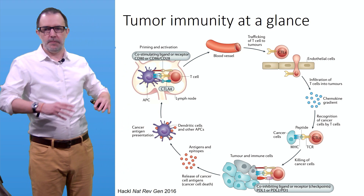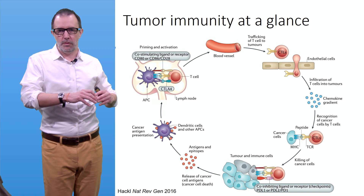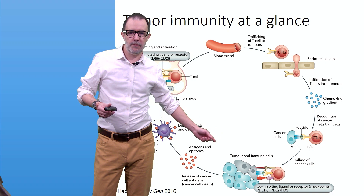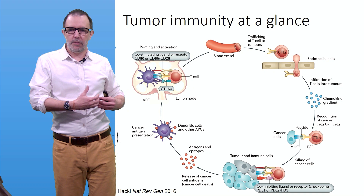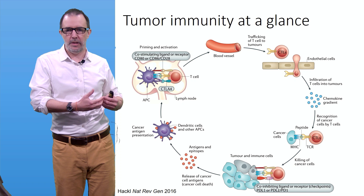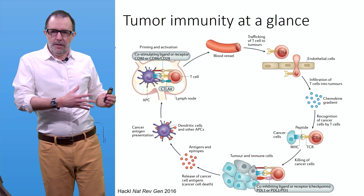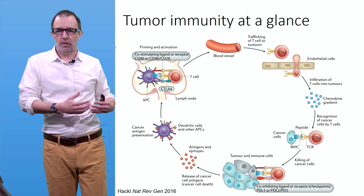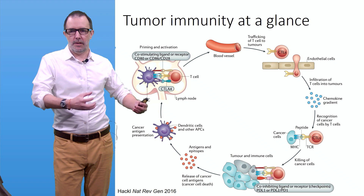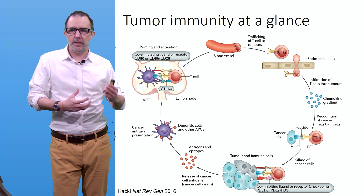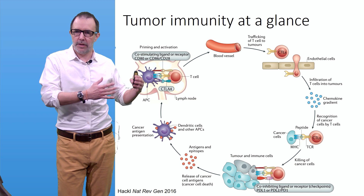How does this tumor immunity cycle work? It all starts with the dying of some cancer cells. When they die, they release antigens and epitopes — proteins or peptide pieces that are very specific to these cancer cells. Present in the tumor are antigen-presenting cells, such as dendritic cells, that will uptake these antigens and migrate into the lymph nodes, where they will prime and activate T cells.